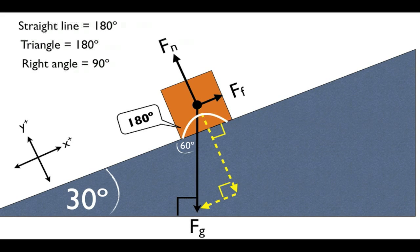So we take 180 degrees, subtract our 90 degrees from that right angle, and subtract again the 60 degrees that we just found, and we find the missing angle of 30 degrees.